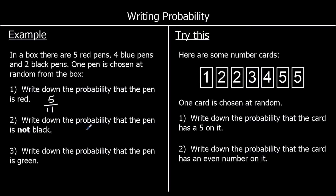Write down the probability that it's not black. Five red and four blue are not black, so nine are not black out of eleven in total — that's nine elevenths. Write down the probability that the pen is green. There are no green pens, so the probability is zero. There's no chance of getting a green pen.